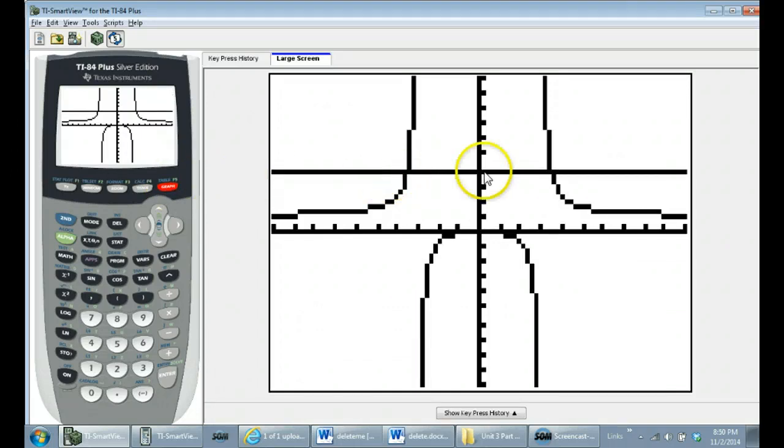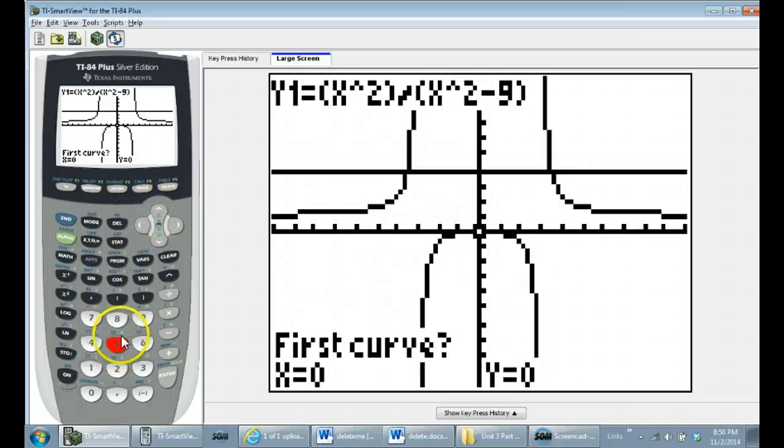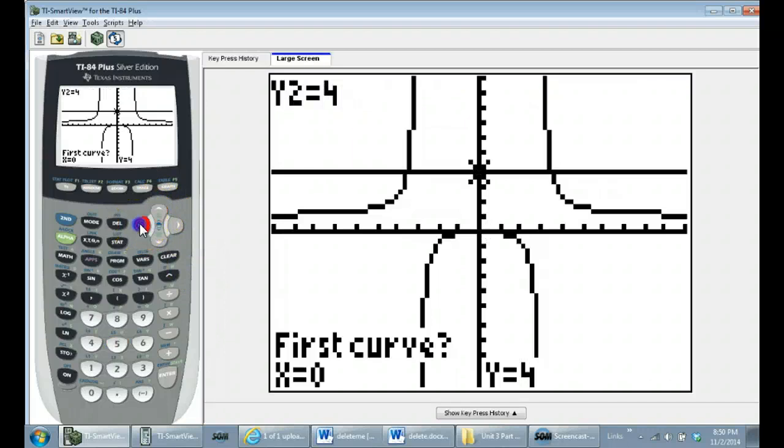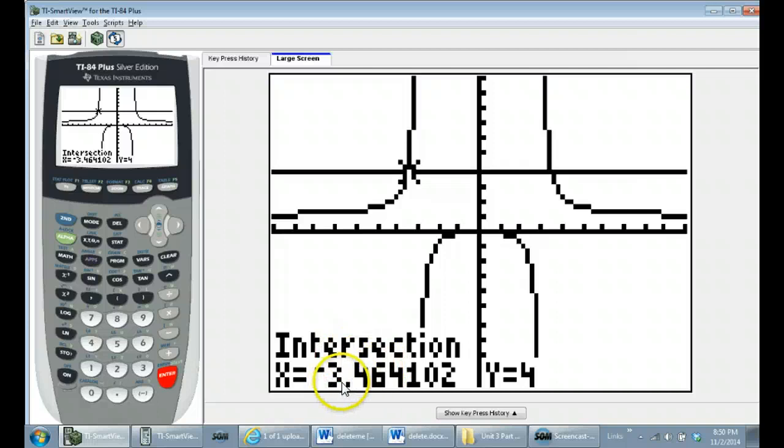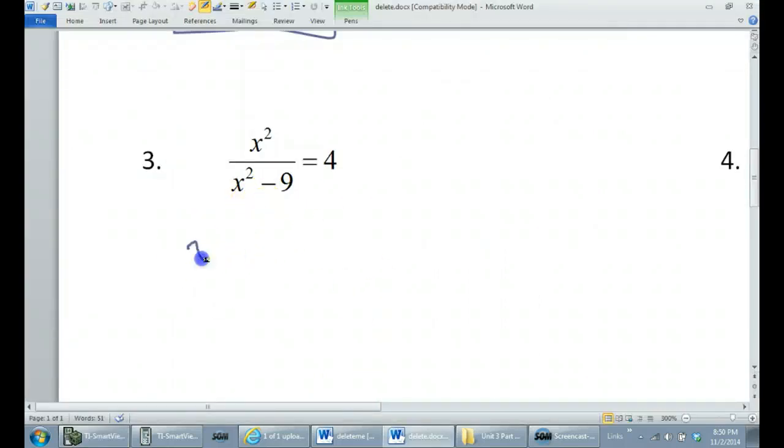Okay, so the intersections are here and here. The straight line is the y2. So I will hit 2nd, trace 5 for intersection. And again, it'll be easier for me if I jump up to the horizontal line, so I can just go straight on over there without any shenanigans. And hit enter 3 times. Okay, so I've got this negative 3.46. So x is equal to negative 3.46. Obviously that's an approximation, but that's going to be good enough.